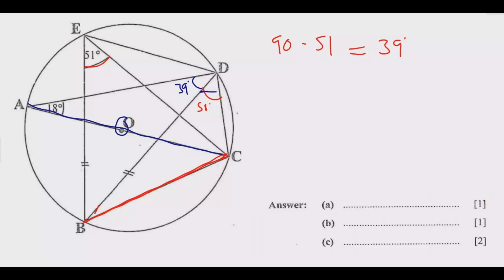Now let's find other angles. I know this is a chord. Points D and C are touching the circumference. If this is 18 degrees, this angle should also be 18 degrees.